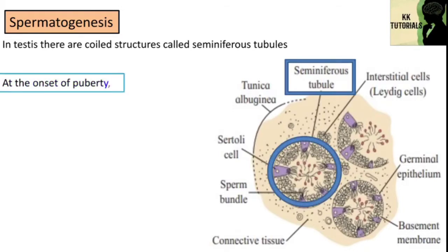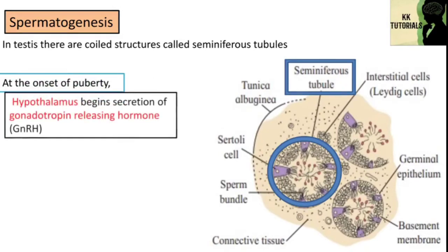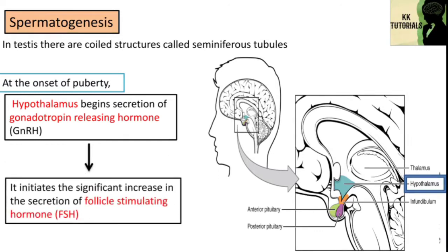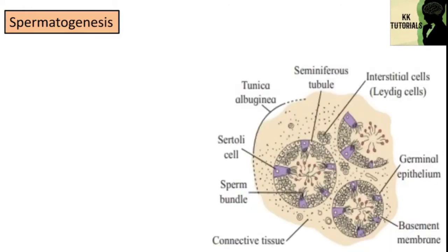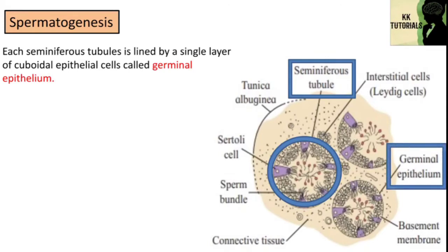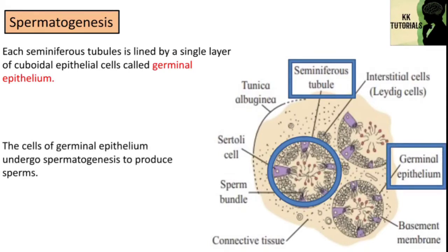At the onset of puberty, the hypothalamus of the brain begins secretion of gonadotropin-releasing hormone. It initiates a significant increase in the secretion of follicle-stimulating hormone, that is FSH, which induces spermatogenesis. In the testis, each seminiferous tubule is lined by a single layer of cuboidal epithelial cells called germinal epithelium. The cells of germinal epithelium undergo spermatogenesis to produce sperms.